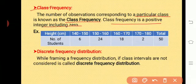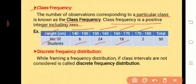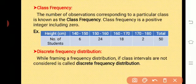For example, consider the distribution of height of students, with height in centimeters and number of students. The class 140 to 150 has a frequency of 6 students. Similarly, 150 to 160 has 24, 160 to 170 has 18, and 170 to 180 has 2. The values 6, 24, 18, and 2 are the class frequencies corresponding to each particular class.